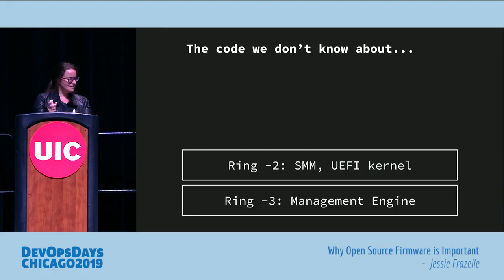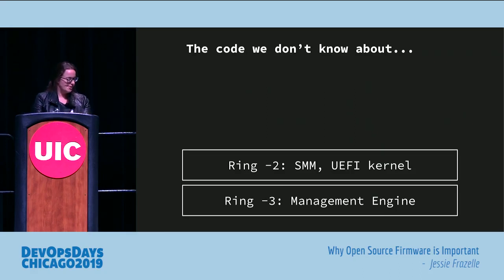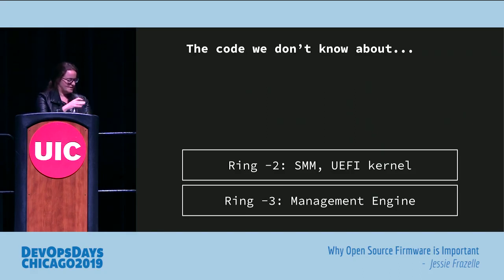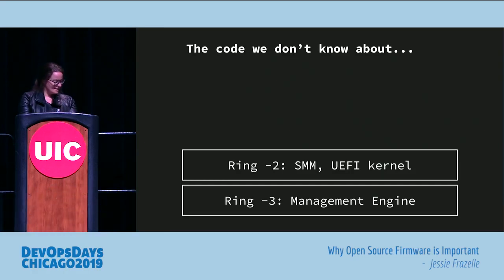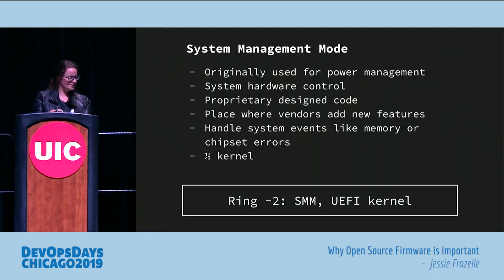The code that we don't know about — because you can use open source software for all the others — is system management mode, the UEFI kernel, and the management engine. That's pretty scary, that our most privileged software is in the layers that we don't know about. So let's kind of go over what these are.